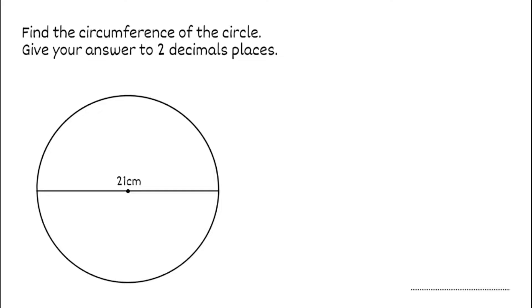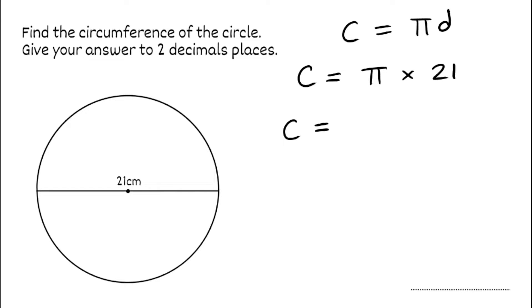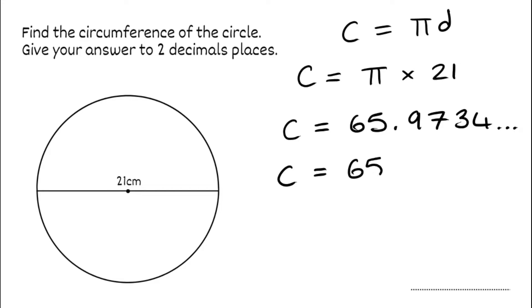For this next question we've got to find the circumference and give our answer to two decimal places. Our formula is circumference equals pi multiplied by the diameter. For this question the diameter is 21, so the circumference equals pi multiplied by 21. Typing that into our calculator gives 65.9734... Rounding to two decimal places, the next digit is 3 so the 7 stays, giving us 65.97 centimetres.